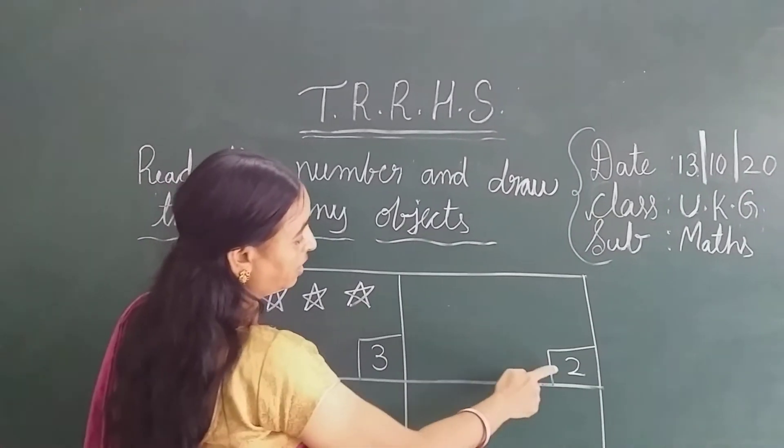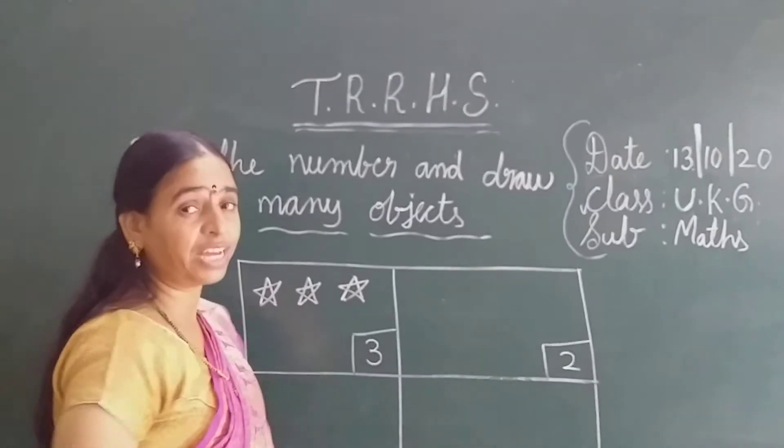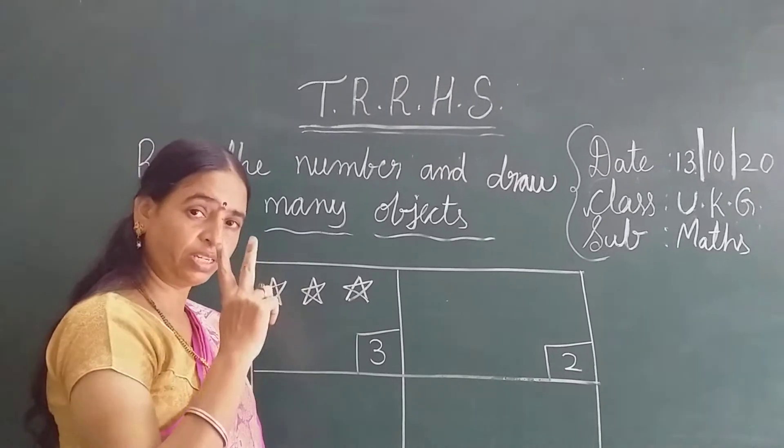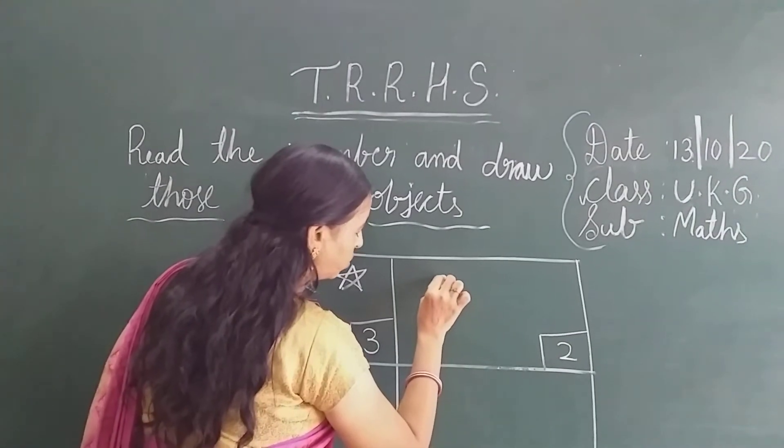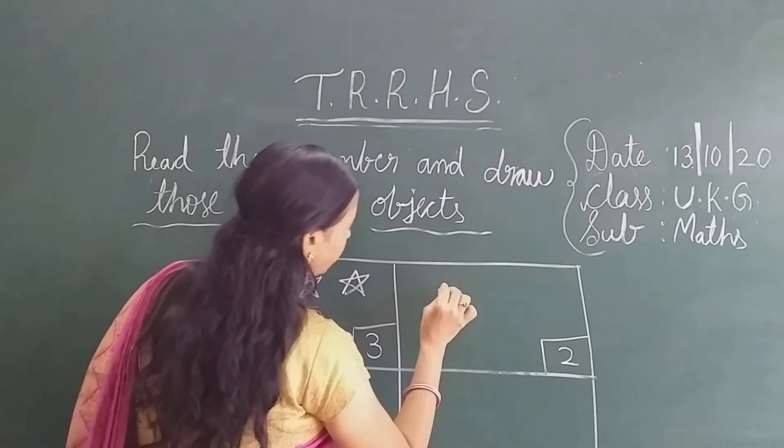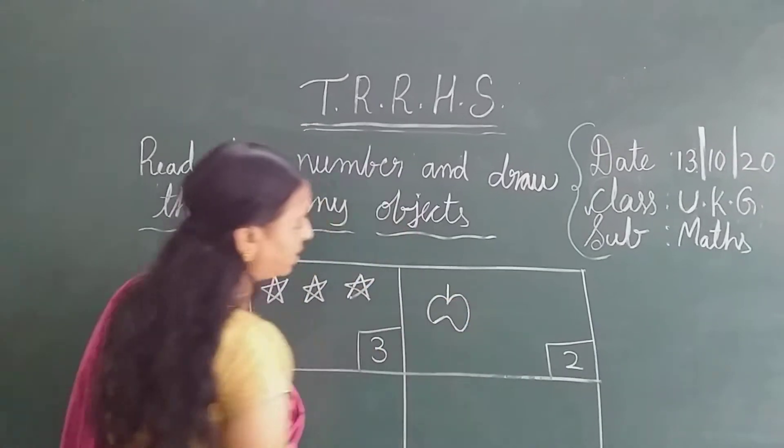And here look at here. What is the number? 1, 2. So how many objects we have to draw? Only 2. So what we are going to draw? Look at the board properly. Now look at here. What is this?